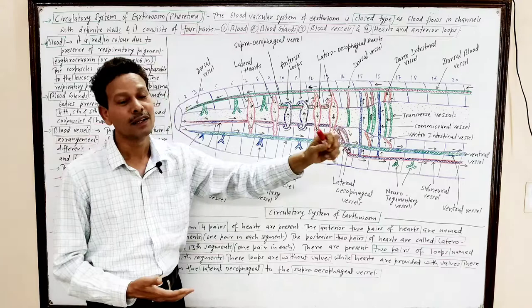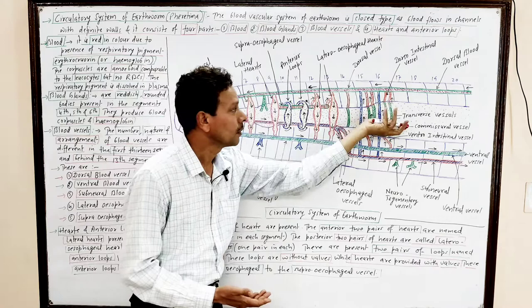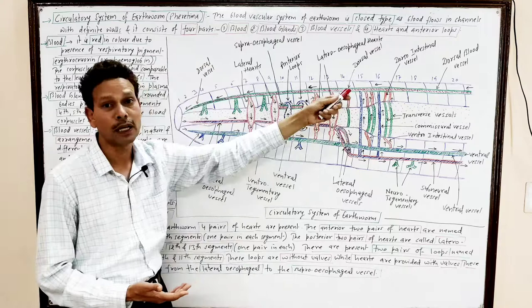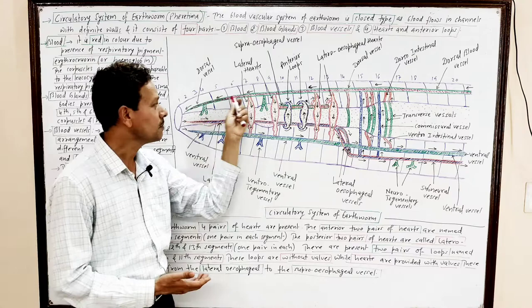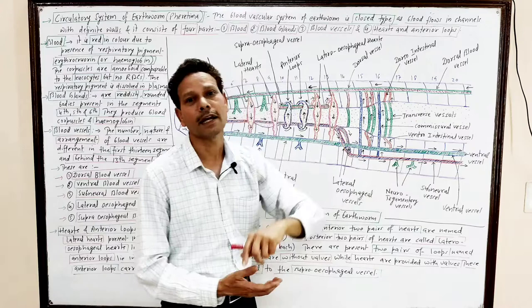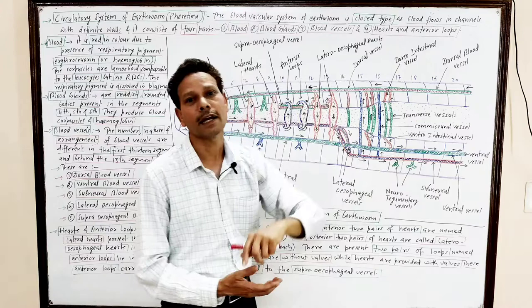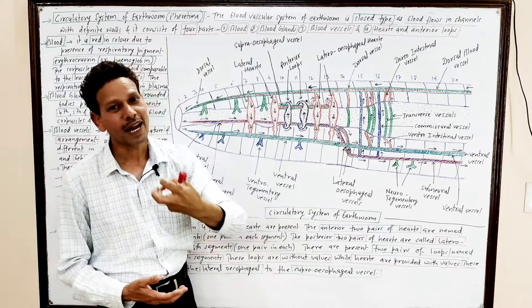The dorsal blood vessel is the largest blood vessel that lies mid-dorsally above the alimentary canal, extending from the last part up to the anteriormost part of the body. This blood vessel has valves. In the posterior parts — behind the 13th segment — the dorsal blood vessel acts as a collecting channel.